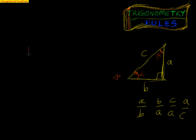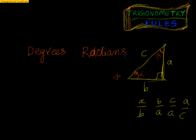I am talking about degrees and radians. These are the two measurement units which we use generally to measure the angles of a triangle or anywhere you want to measure an angle.